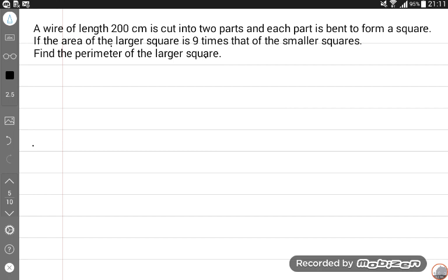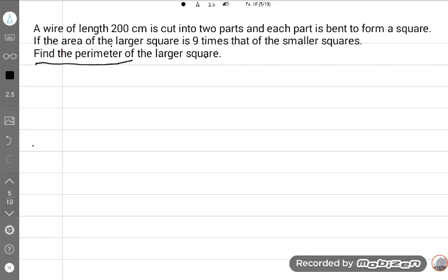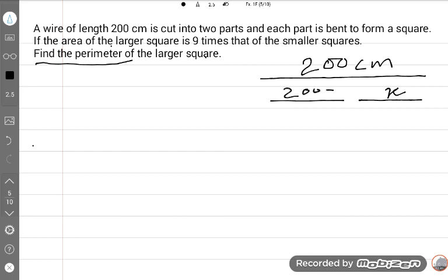Find the perimeter. So, make the diagram. This is the wire, 200 cm, and cut into two pieces according to the condition. This length is, if the small length is x, then the larger length will be 200 minus x. Understand?